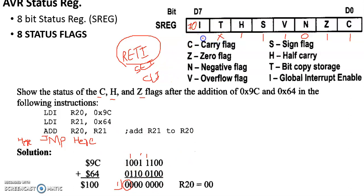The T bit and the global interrupt enable flag are don't care as far as this ADD instruction is concerned.